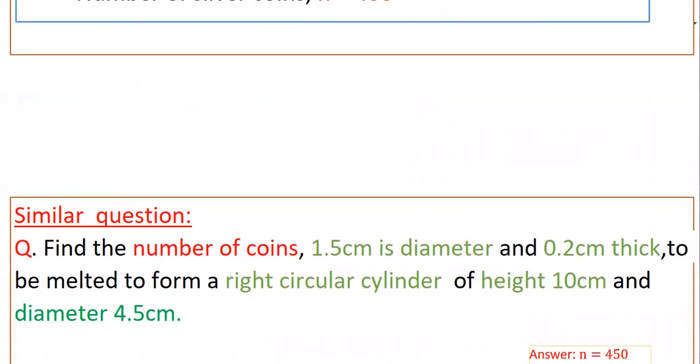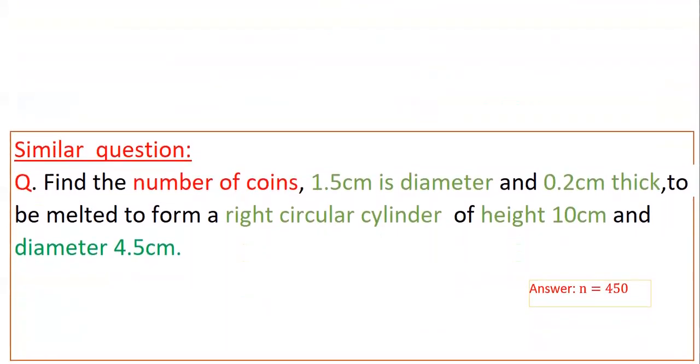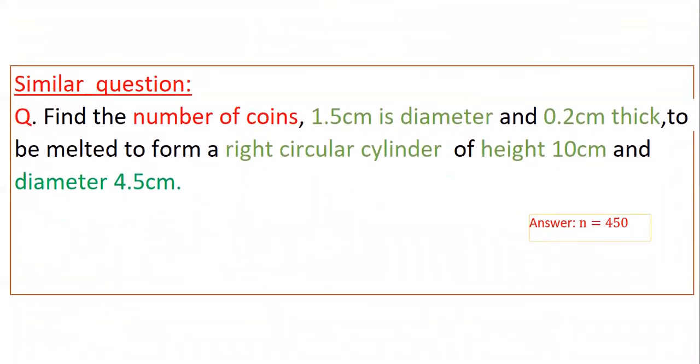Now please do this similar question. Here both are in cylinder shape, right circular cylinder. You can cancel π value on either side.